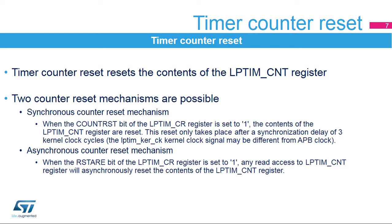The low-power timer features a counter-reset function used to reset to zero the contents of the LP-TIM-CNT register. Two counter-reset mechanisms are possible: the synchronous counter-reset mechanism and the asynchronous counter-reset mechanism. A synchronous counter-reset is performed by setting the COUNT-RST bit, and due to its synchronous nature, it only takes place after a synchronization delay of three LP-TIM kernel clock cycles. When the RST-ARE bit is set, an asynchronous counter-reset is performed on the next APB read access to the LP-TIM-CNT register.